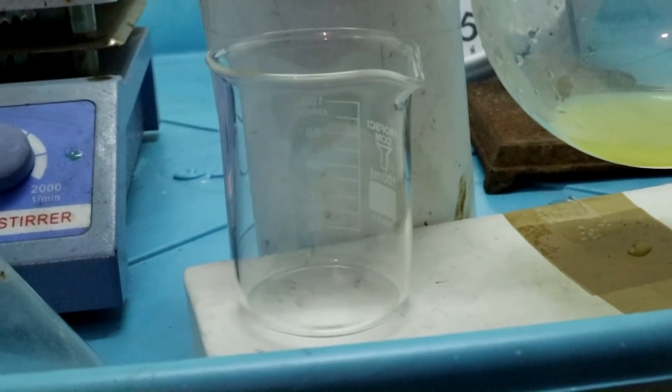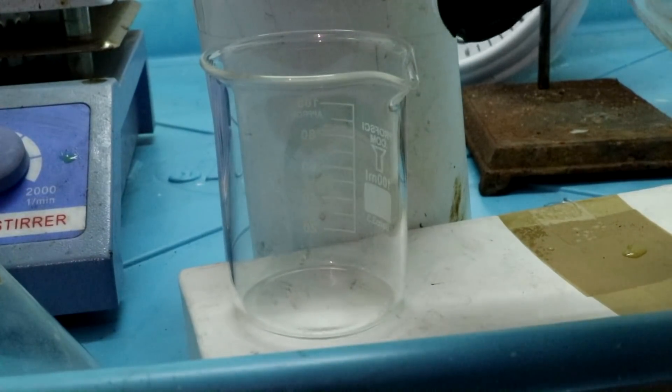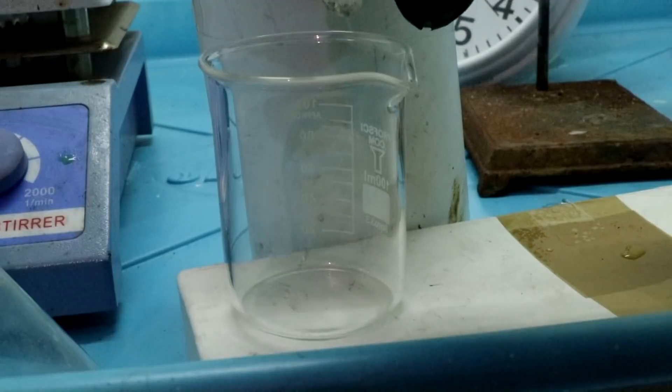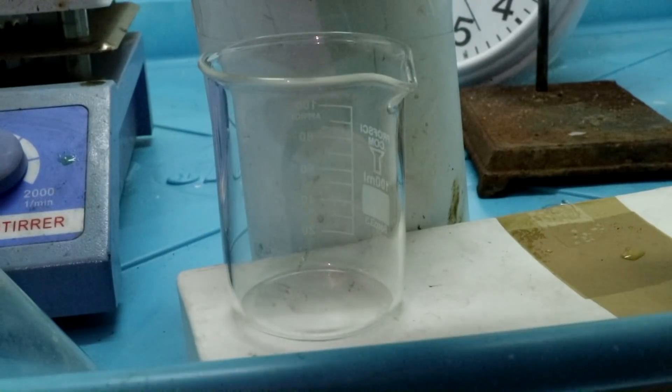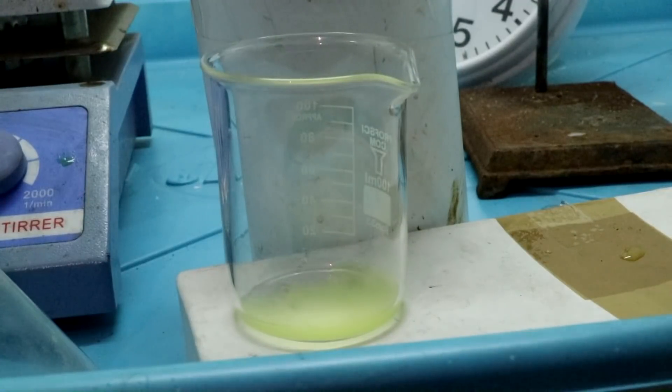But just to check to make sure that we have made what I think I've made, let's add some to a beaker. Just a little bit. A few drops. Okay. Now to this I'm going to add some ferrous sulfate.